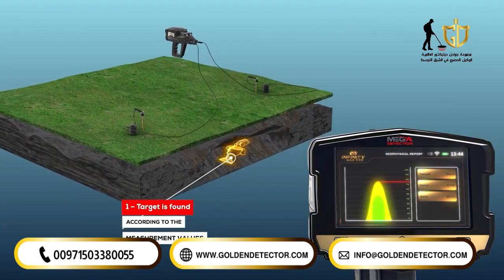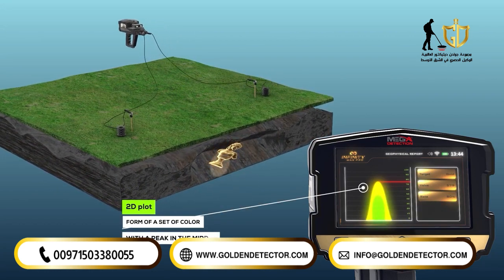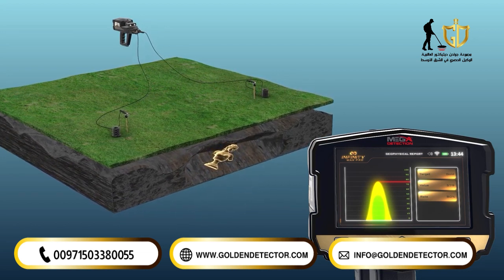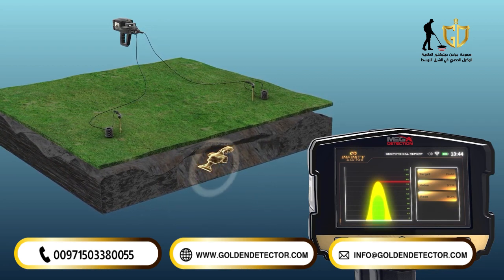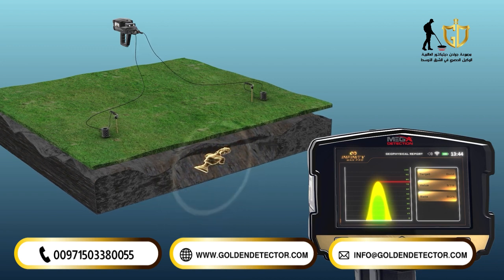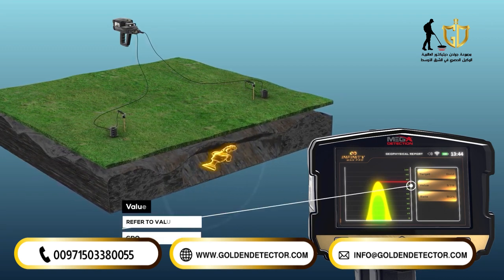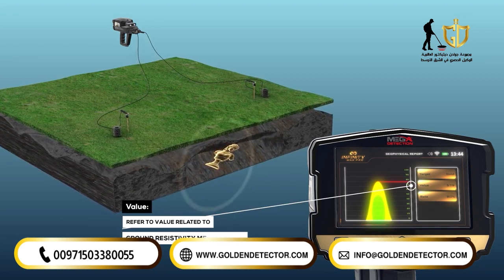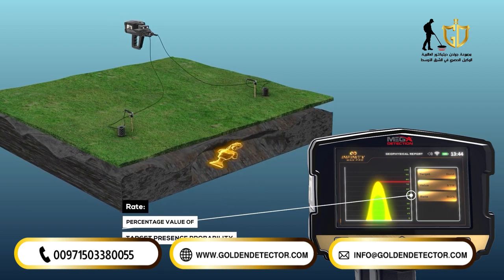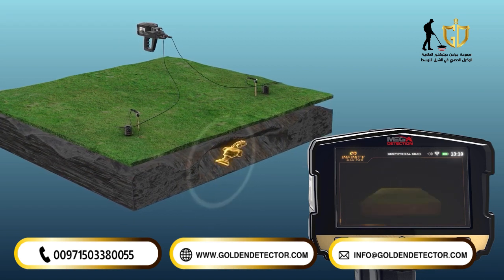Target found: The results screen displays a 2D plot in the form of a set of color-changing ellipsoid curves from green to red, with a peak in the middle of the graph, corresponding to a percentage on the vertical axis representing the probability of the target's presence. To the right of the 2D plot are information boxes showing: the selected target type (e.g., gold), the ground resistivity measurement value, and the rate — the percentage probability of target presence, corresponding to the apex of the upper ellipse.